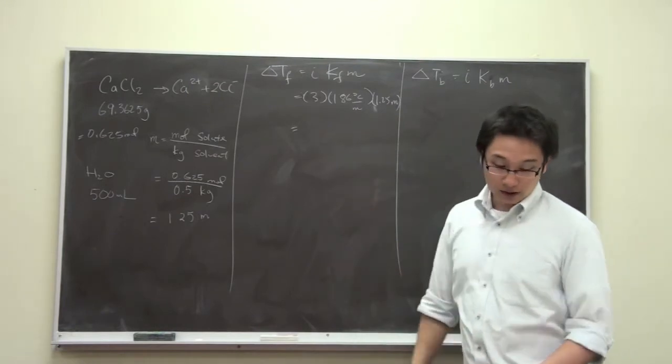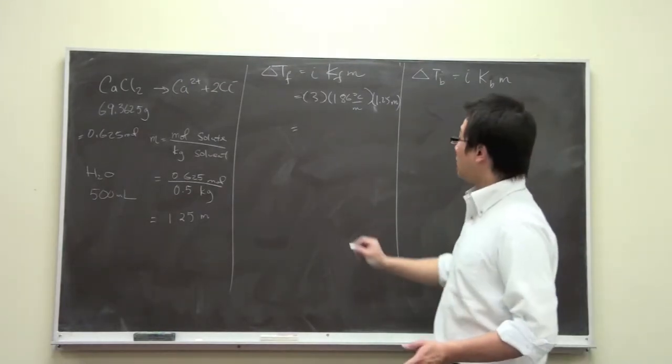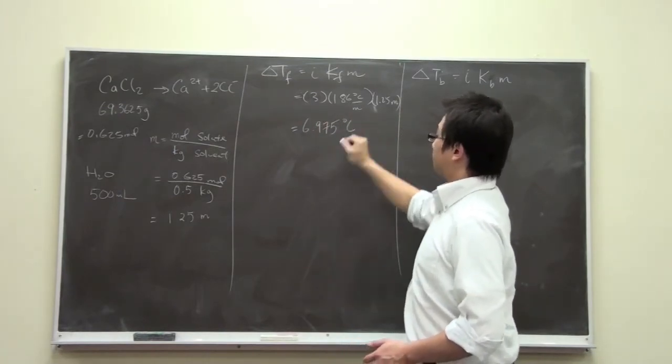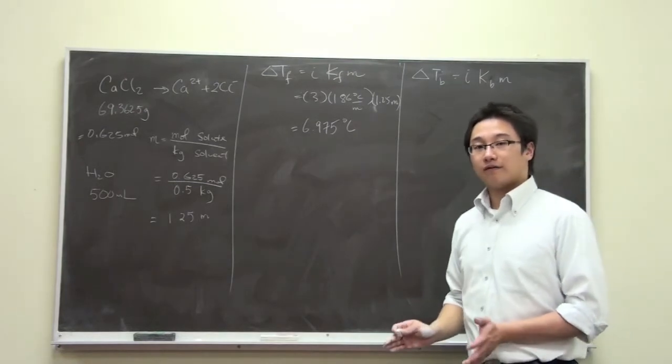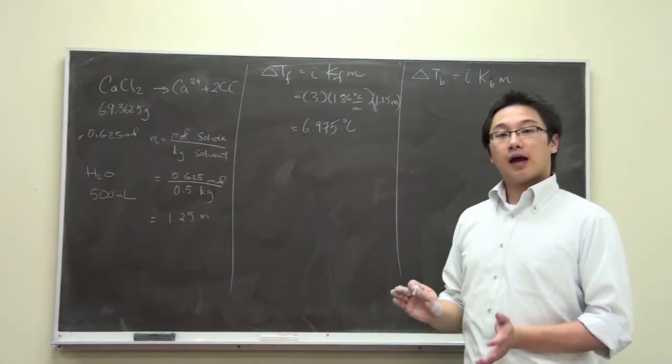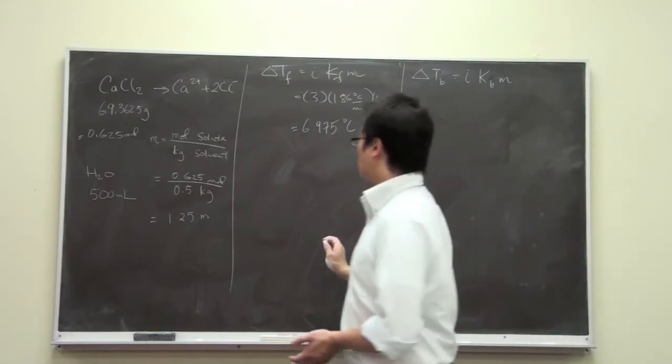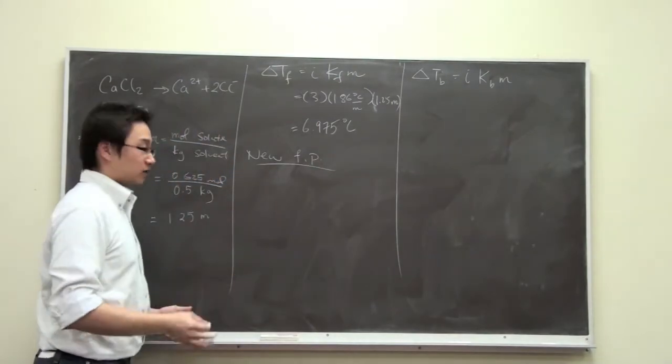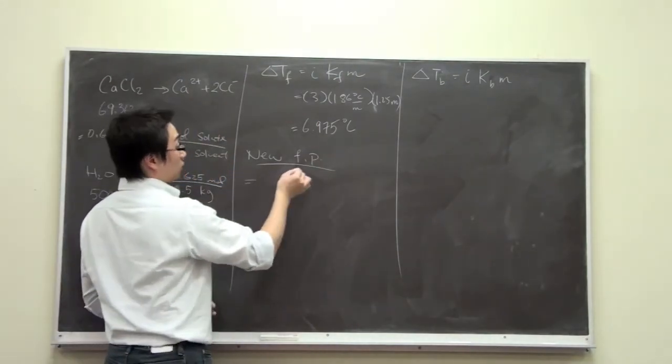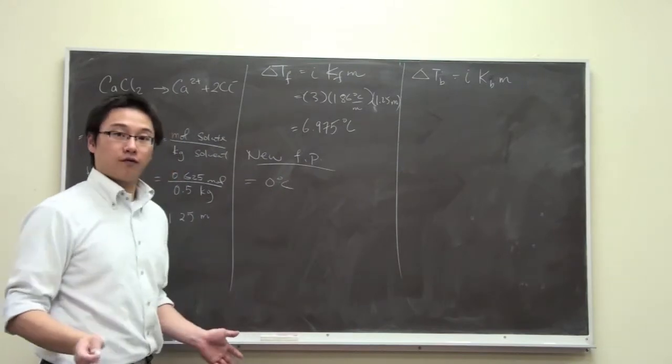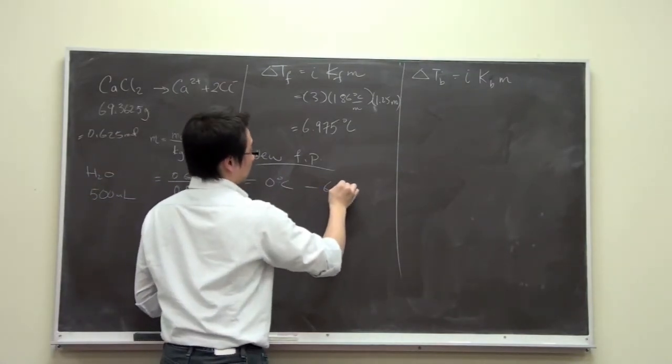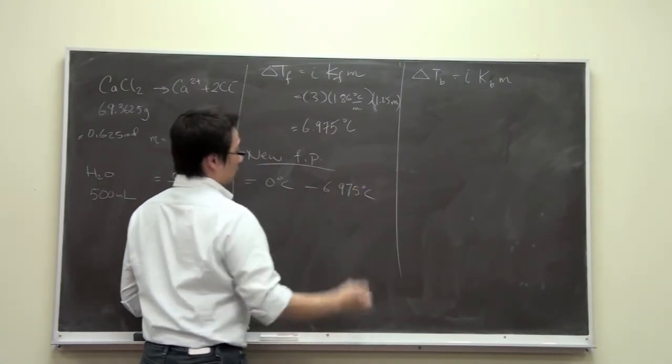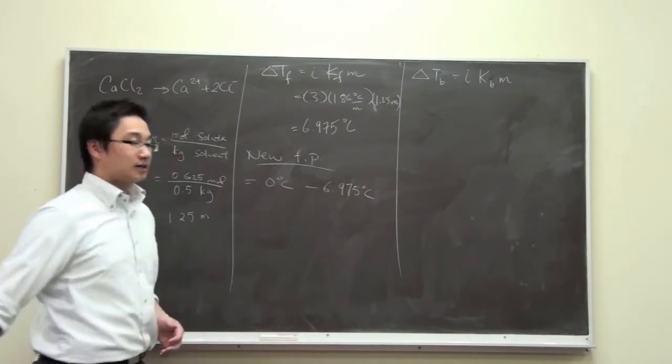And if we can calculate this, we will find out that the change, the change of temperature is 6.975 degrees Celsius. And remember, this is just a change. So if you want to find out the new freezing point, we have to subtract from the original. So the original is 0 degrees Celsius. This is something that we should know for water. And we subtract 6.905.